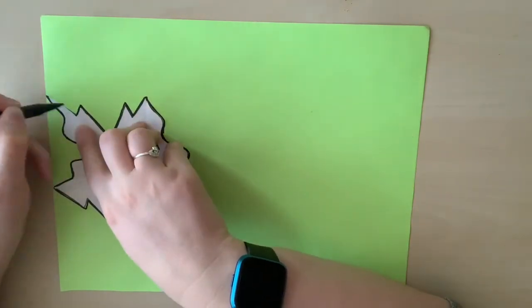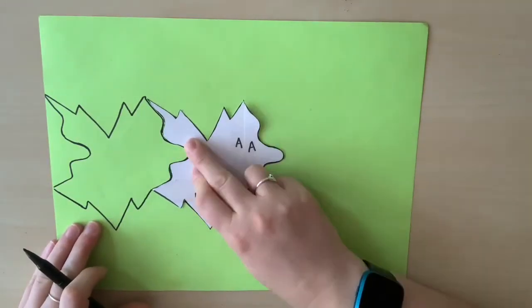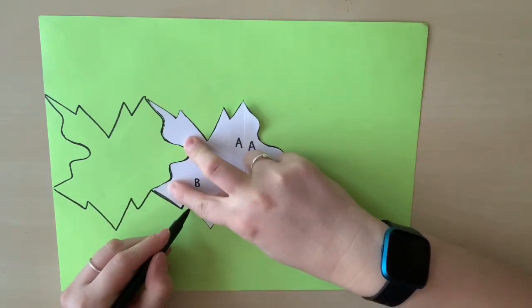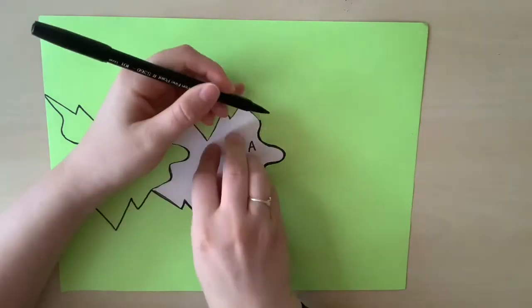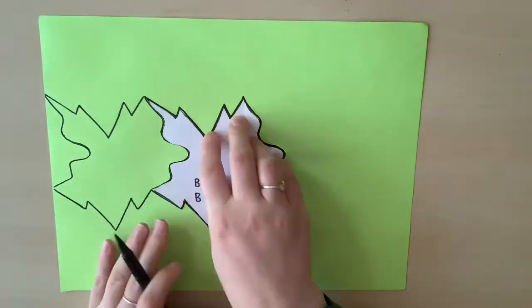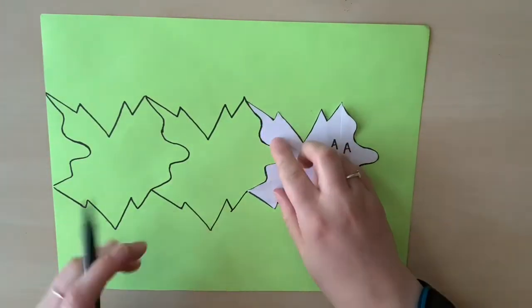This is important for the next part because we're going to take our shape and move it over. And it should fit together like a puzzle piece with the other side of the shape if you just slide it. I'm going to trace around it again and then keep on going across my paper.